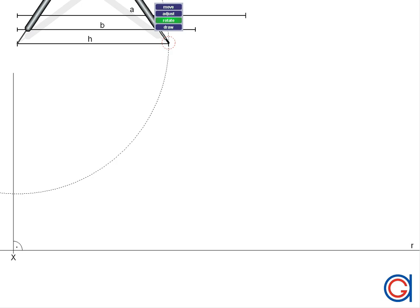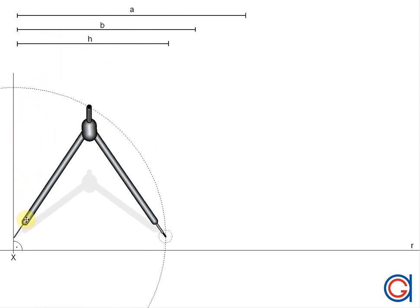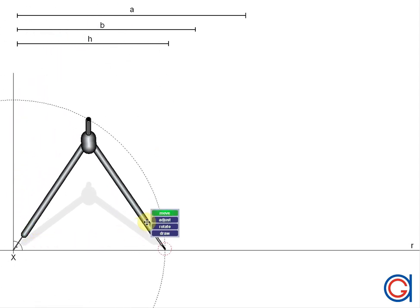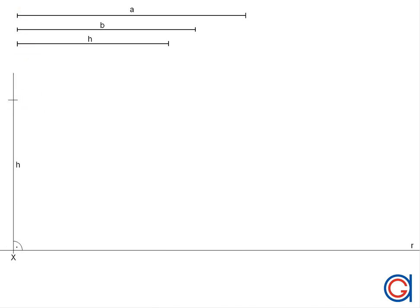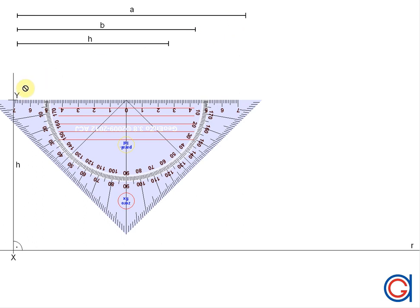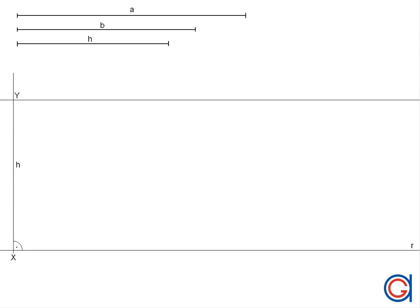Now setting our compass to the given height H, we're going to transport this onto the vertical line. Setting the compass on point X, we scribe an arc to the left obtaining our height H. We will call this new point Y, and now from this point we will draw another perpendicular horizontal line as shown here, which we will call S, and we will mark these two horizontal lines with the symbol of parallelism as can be seen here.